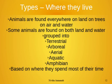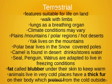Animals are found everywhere — on land, on trees, in air, in water, and so on. Some animals are found on both land and water. Based on this, animals are grouped into terrestrial, arboreal, aerial, aquatic, and amphibious — that is, based on where they spend most of their time.